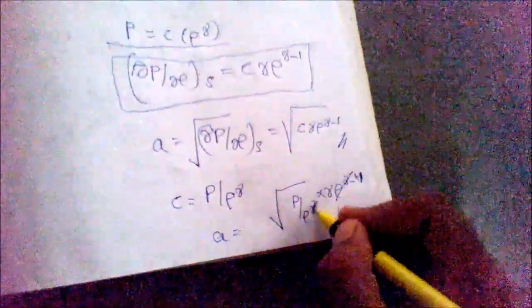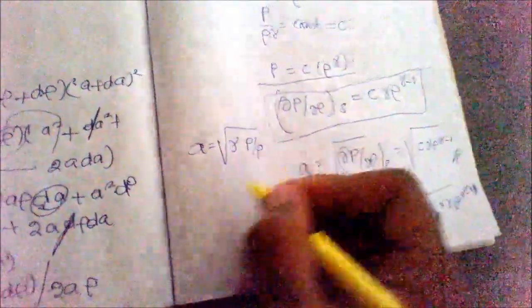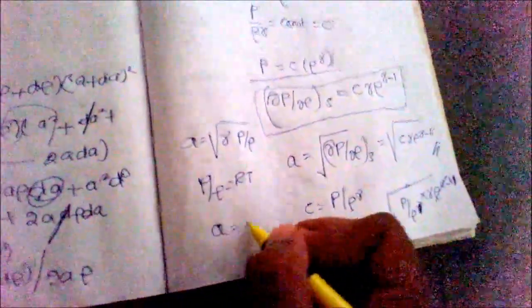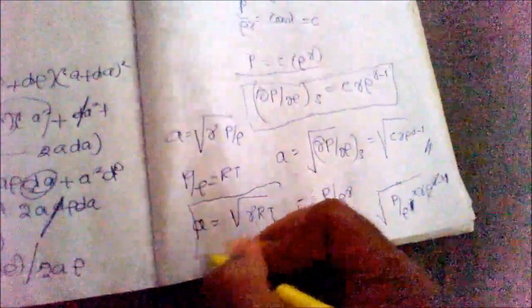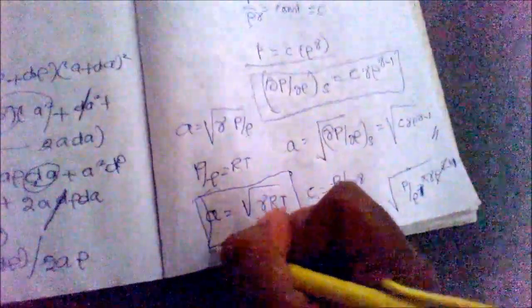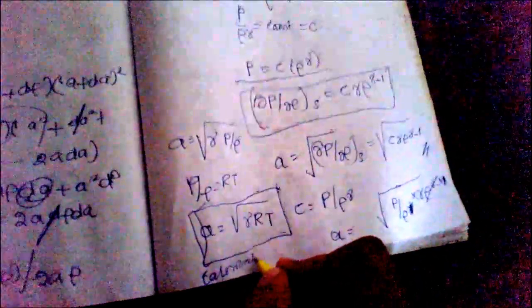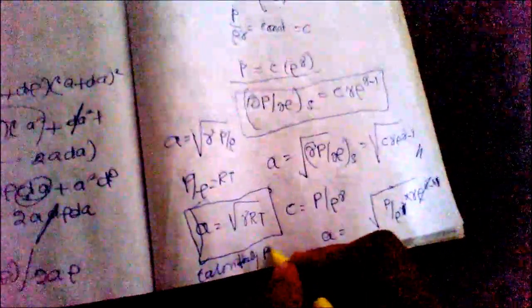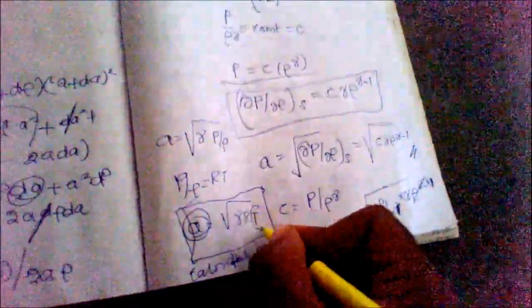Canceling terms, we get A = √(γP/ρ). Since P/ρ = RT, therefore A = √(γRT). So for a calorically perfect gas, the speed of sound is a function of temperature alone.